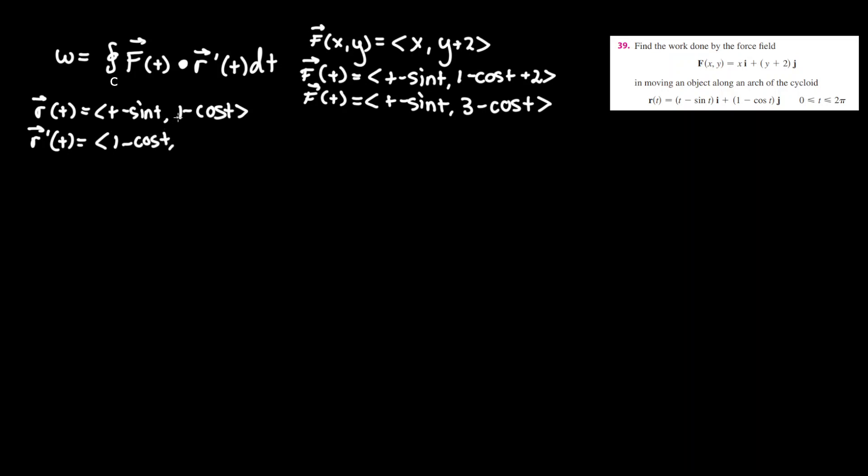Doing it here, derivative of 1 is 0. Derivative of cosine is negative sine but negative times negative will be positive so it turns to just positive sine t.